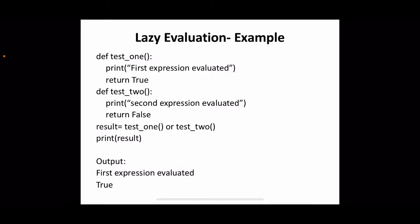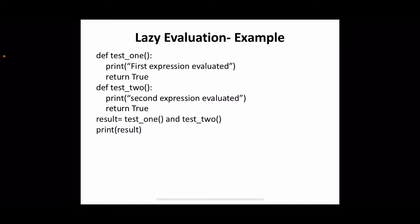Now let's see another example. Same definition: test1 prints 'first expression evaluated' and returns true. The second function also returns true. The result calls test1 and test2, but instead of OR, we have AND. The definition of AND is: if both of the operands are true, the result is true. So in this case, the first operand is true, but you should definitely check the second also. Then only you can confirm the result is true. So definitely the result will be 'first expression evaluated', then 'second expression evaluated', then true.